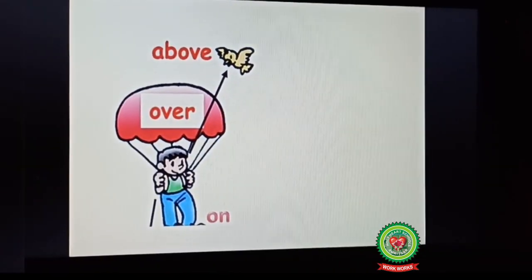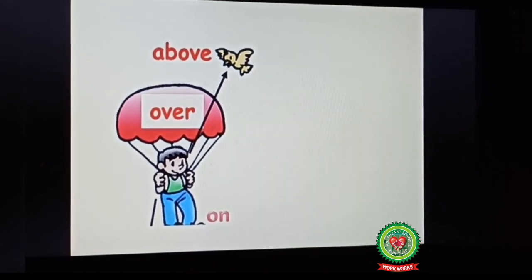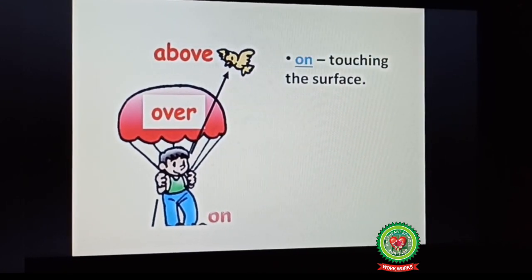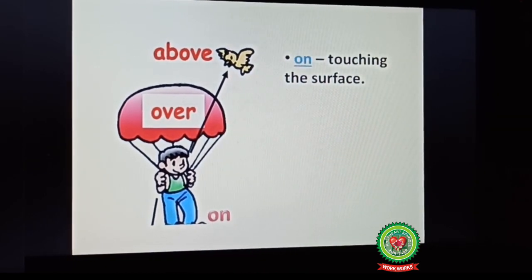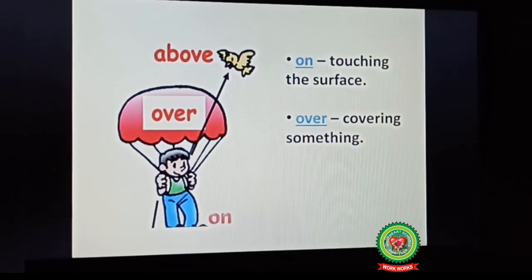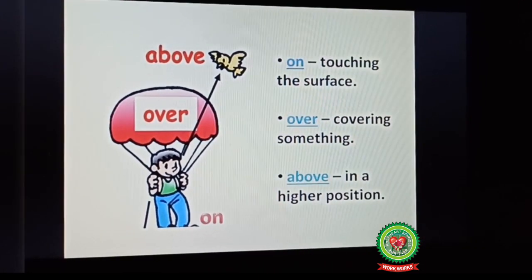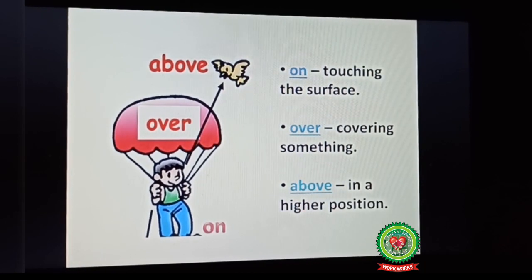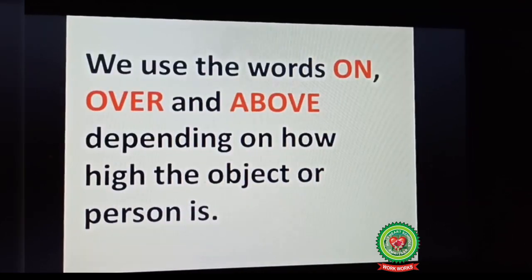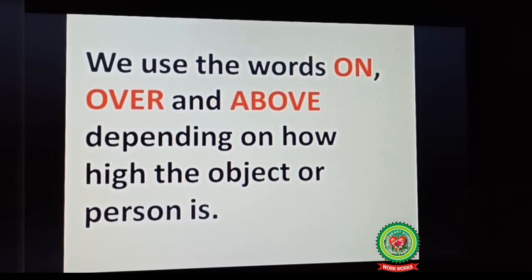We have also discussed use of on, over and above — where you will use on, over and above in a sentence. On is used when something is touching the surface. Over is used when something is covering some other thing. And above means in a higher position. We use the words on, over and above depending on how high the object or person is. Now let us discuss their examples one by one.